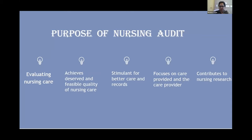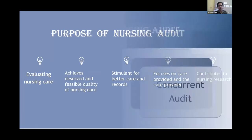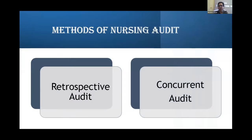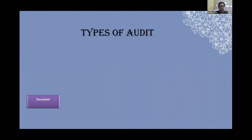The care providers were looked into because if there were gaps in terms of training, we focused on making sure that training was done. And of course, it contributes to nursing research. There are two methods of nursing audit: retrospective audit and concurrent audit. Retrospective audit is an audit done once a patient is discharged. Concurrent audit is done while patient care is still ongoing in the hospital. The question then is: what do we assess, or what type of audit should we do in nursing?